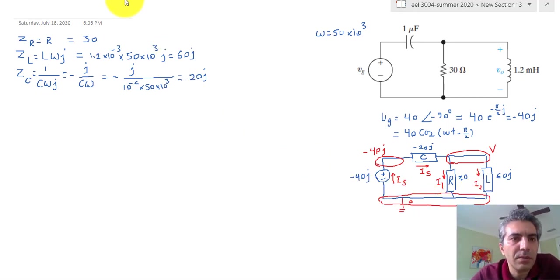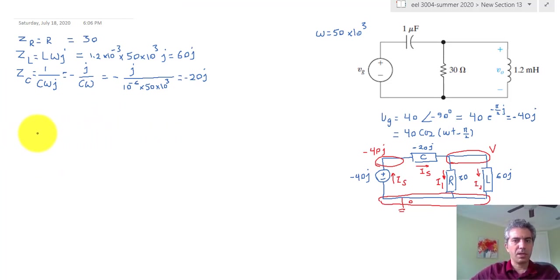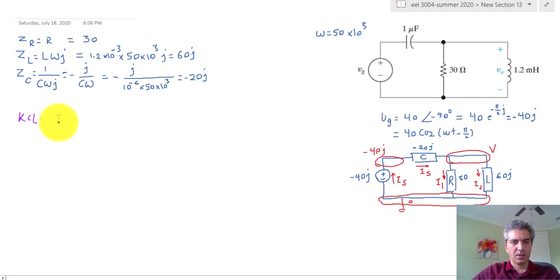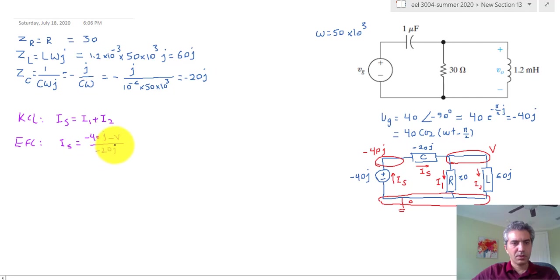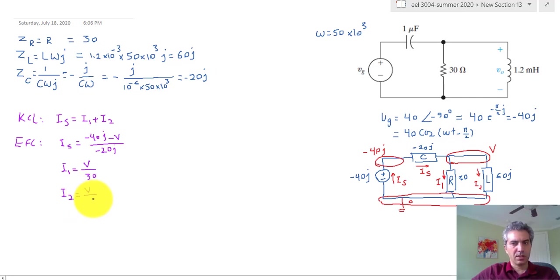Now let's write the equations. We write KCL for node V: I_s equals I_1 plus I_2 (current in equals currents leaving). The component equations are: for the capacitor, I_s = (minus 40 J minus V) divided by minus 20 J; for the resistor, I_1 = (V minus 0) divided by 30; and for the inductor, I_2 = (V minus 0) divided by 60 J. As you can see, these are all linear equations.